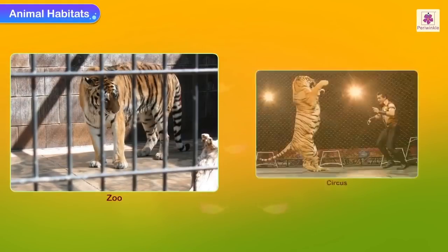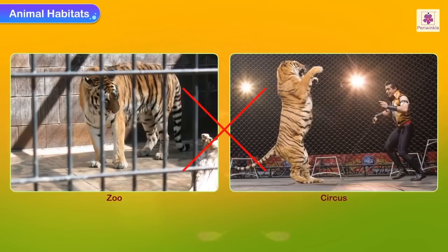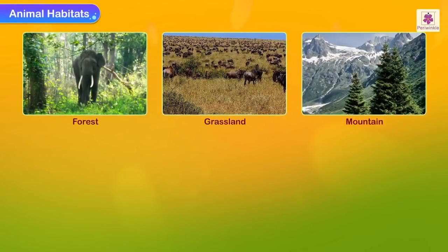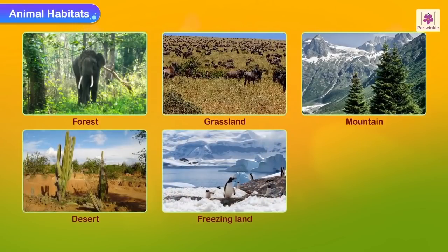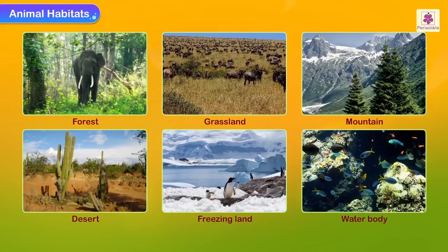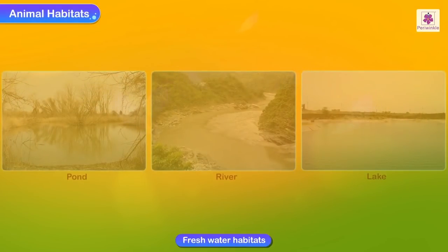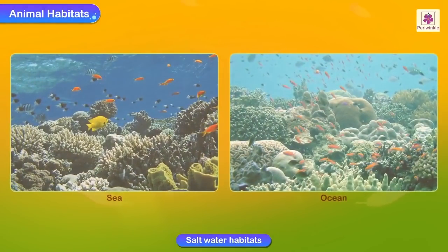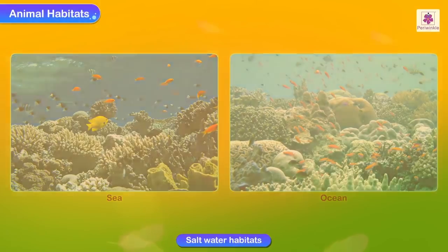A zoo or a circus is not the tiger's natural habitat where we normally see them. Different places have different kinds of plants and animals. Forests, grasslands, mountains, deserts, the freezing lands around the poles, and different water bodies are all different habitats. There are freshwater habitats like ponds, rivers and lakes, and saltwater habitats like seas and oceans.